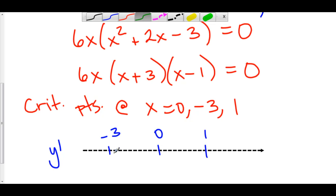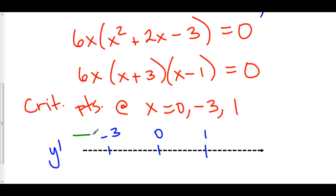Let's look to the left of negative 3 — how about negative 5? The factor 6x is negative, (x plus 3) is negative, and (x minus 1) is negative. Negative times a negative times a negative is negative. So our derivative is negative to the left of negative 3.